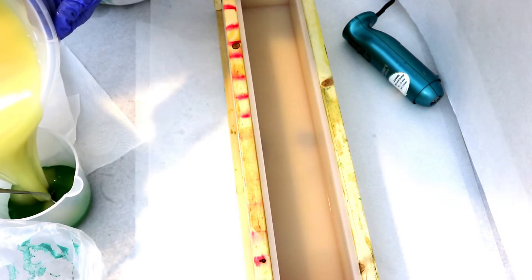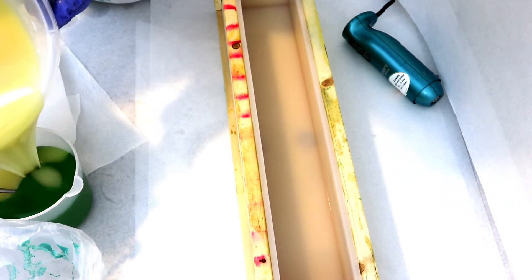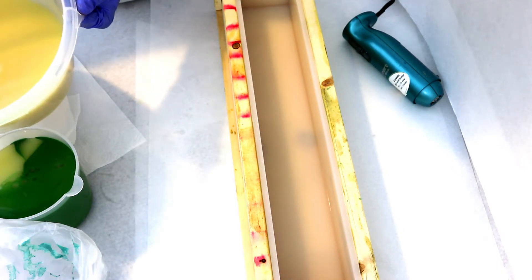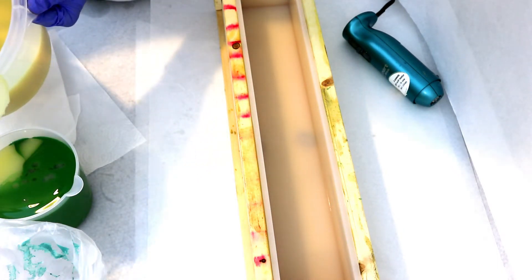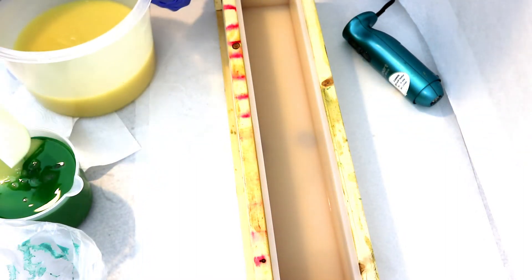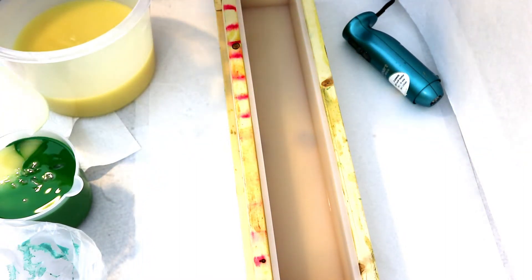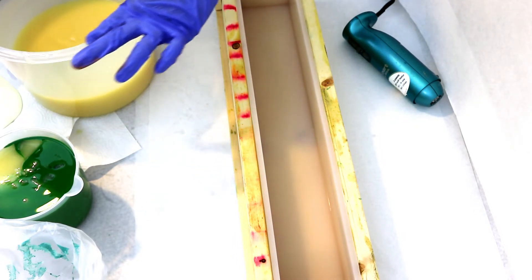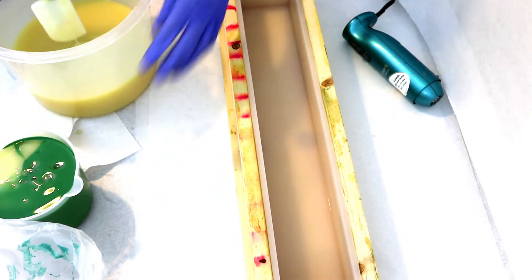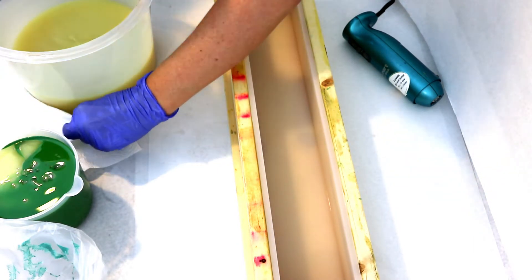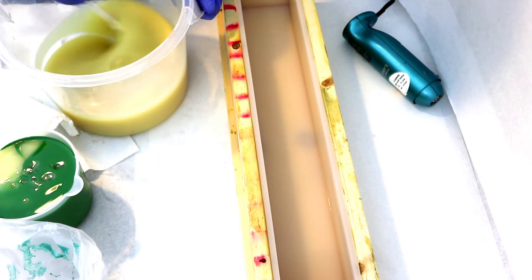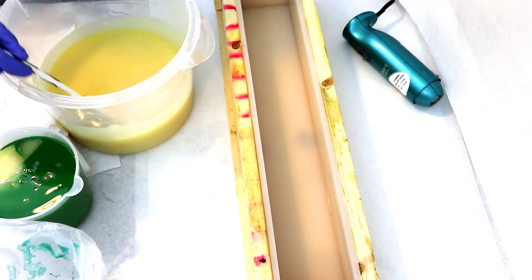Now I'm pouring off the green which is going to be for the leaves, and I'm using a green oxide for the green color for the leaves.